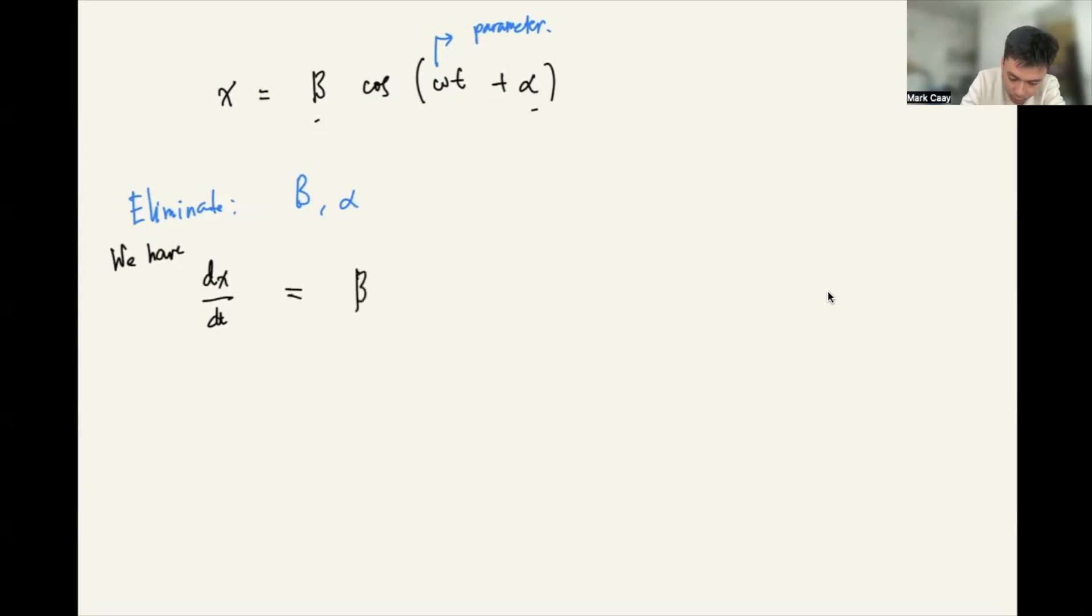Taking the derivative of cosine is negative sine. So negative sine of omega t plus alpha times the derivative, which is omega. If we simplify this, this will be negative B omega sine of omega t plus alpha.